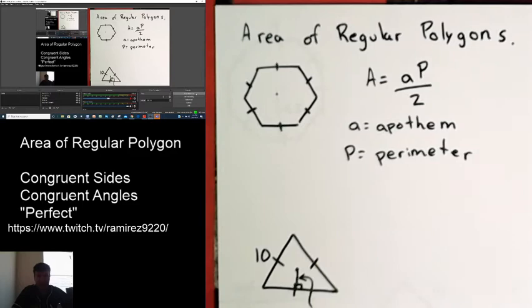So today, I'm going to talk about the first part. And the first part is when they give you everything, basically. Part two will be when you have to find the apothem. And part three is when you have to find the missing side.